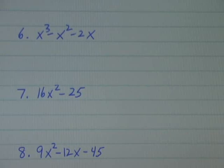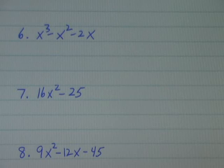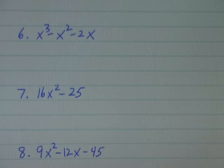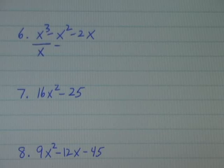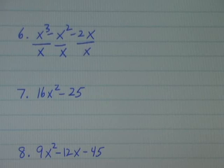I'm going to factor problems 6 through 10 on your review quiz. Number 6: x to the third minus x squared minus 2x. I have a trinomial. I'm going to try and factor out a common monomial term if I can, and I see that I can. What's common to x to the third, x squared, and minus 2x? Well, it's x.